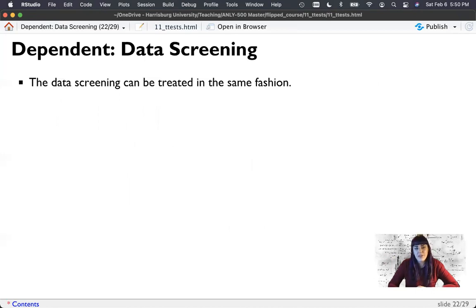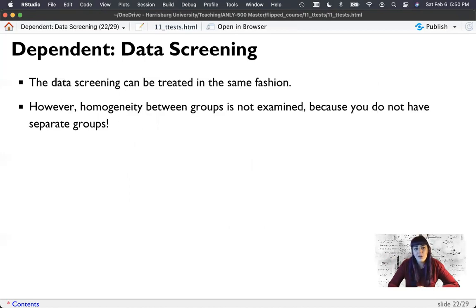Now in the data screening, it's roughly the same as before, but there's no homogeneity between groups because I only have one group. So no homogeneity because homogeneity implies that there are two different points, two different groups. We don't have that. We have one group of people tested twice. I don't assume that the variances in each test are the same because we've subtracted. We have one set of scores of differences and when you have one, you can't compare it to anything. So no homogeneity.